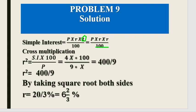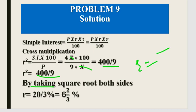Setting up: 4x/9 = xR²/100. Dividing both sides by x: R² = (4 × 100) / 9 = 400/9. Taking the square root: R = √(400/9) = 20/3 = 6⅔%. So the rate of interest is 6⅔% per annum, and the time is also 6⅔ years.